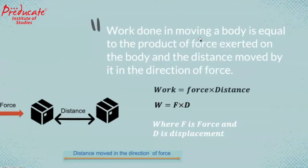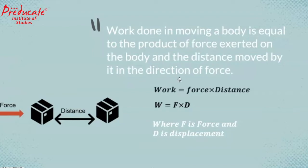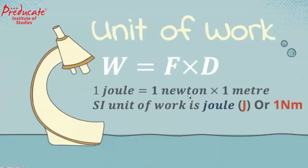Hence, work done in moving a body is equal to the product of force exerted on the body and the distance moved by it in the direction of force. Work is equal to force into distance. And the SI unit of work is joule, or 1 newton meter.